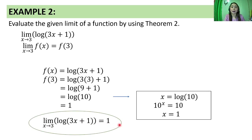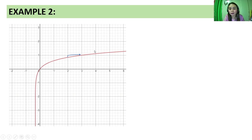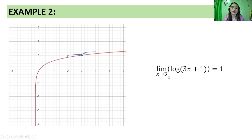Looking at the sketch of the graph, the constant is 3. Habang lumalapit yung x values sa 3 from the left, the y values approach 1. And habang lumalapit naman yung x values sa 3 from the right, the y values still approach 1. Hence, the limit of the logarithm of 3x plus 1 with base 10 as x approaches 3 is equal to 1.